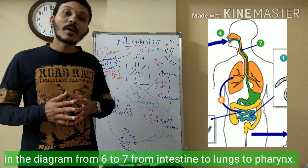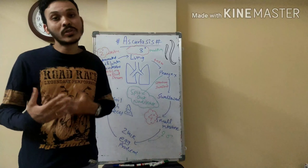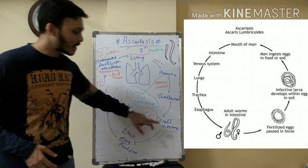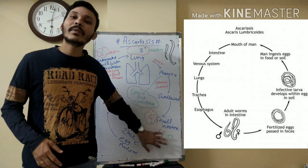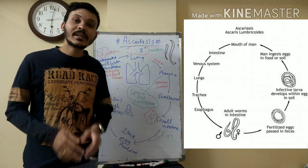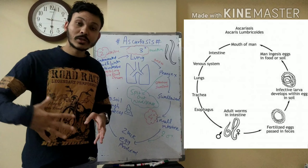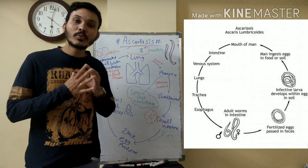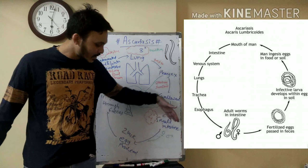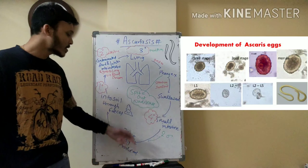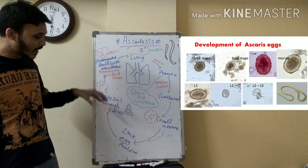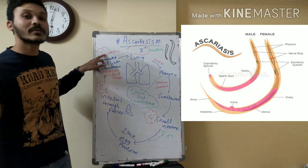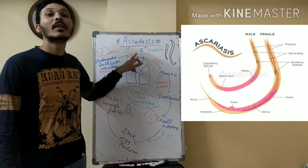It will produce the second and third larval stage, and then it will produce the egg. I will revise it once again: it will come into the intestine where there are male and female. The female will give eggs again — the female will give 2,00,000 eggs. They will go out of the body. This egg is the primary larval stage. The secondary larval stage forms again, and the third larval stage will be in the lungs.